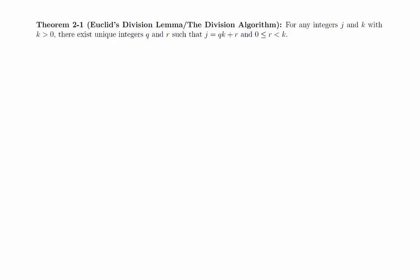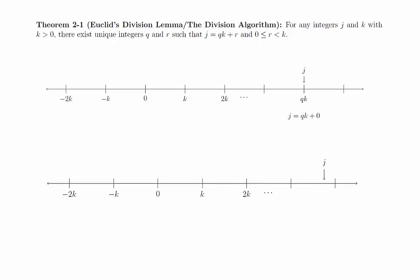The geometric proof relies on some basic intuition about the number line. Let k be a positive integer and label all the multiples of k along the number line, capturing both the positive and negative multiples. The integer j must lie somewhere on the number line as well. If it happens to be a multiple of k, then we have j equals q times k plus 0. If not, then j must lie between two multiples of k. We can label them so that q times k is on the left and q plus 1 times k is on the right. We can then define the value of r as the distance between q times k and j. Clearly, this is less than k, since k is the size of the gap. With this, we can clearly see that j equals q times k plus r. The division algorithm is an important result we will be using throughout the rest of this course.